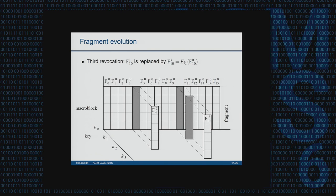This leads to a potentially large number of keys if the policy has very extensive dynamics. However, this is not a problem because we propose the use of key regression techniques, which manage very large collections of secrets without needing to store many secrets — a single secret can be used to derive all keys in a chain.